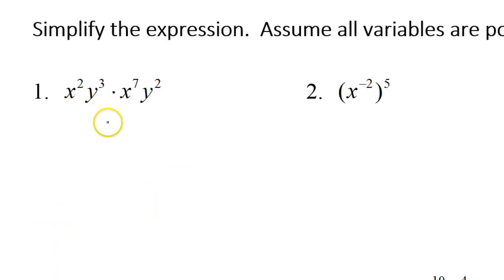So looking at problem number one, remember when you're multiplying variables, this is where you add the exponents. So this should be x to the ninth power because I'm adding these exponents, and that's going to be y to the fifth power. That's it for problem number one.